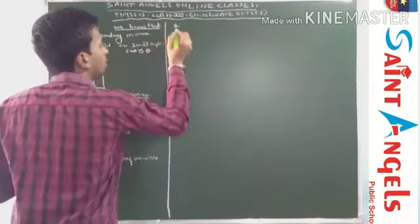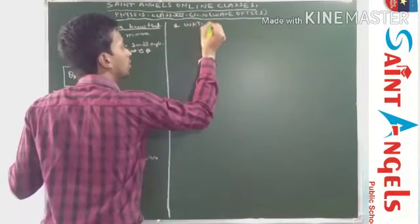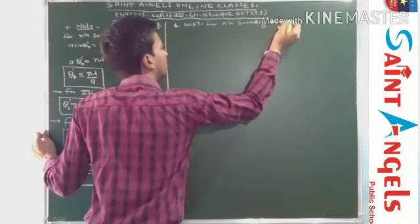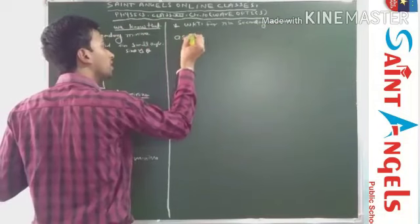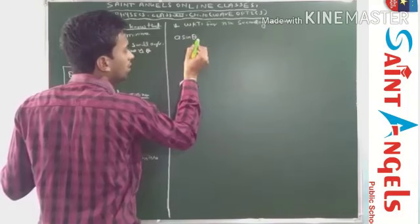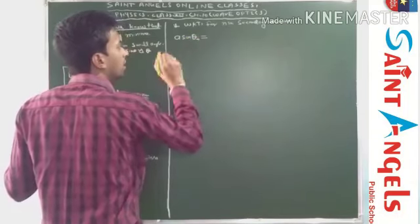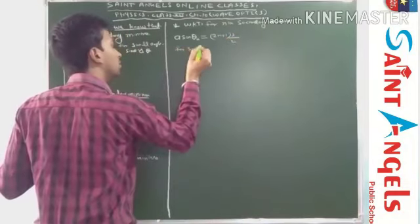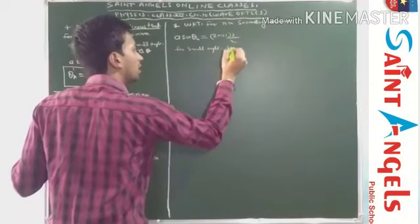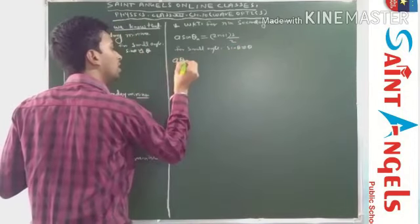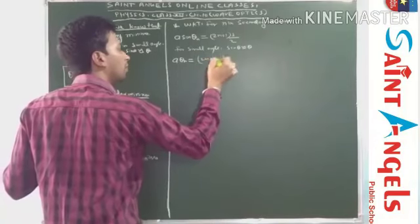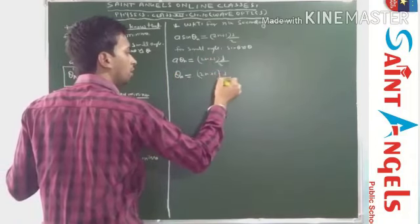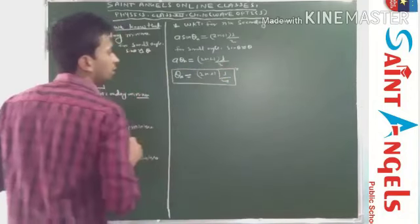Similarly, if we find the angular position of secondary maxima — we know that for nth secondary maxima, a·sinθₙ = (2n+1)λ/2. For small angle, sinθ ≈ θ, so a·θₙ = (2n+1)λ/2. By solving, we get θₙ = (2n+1)λ/2a. This is the angular position of nth secondary maxima.